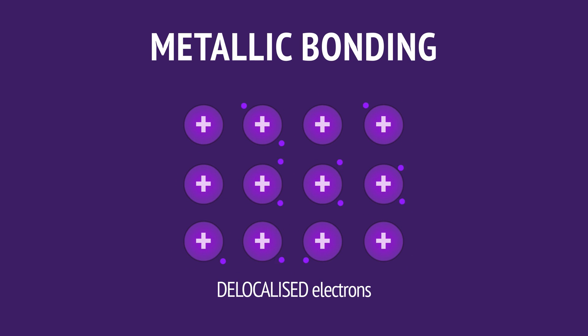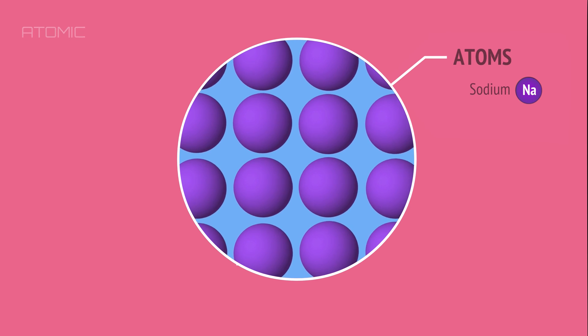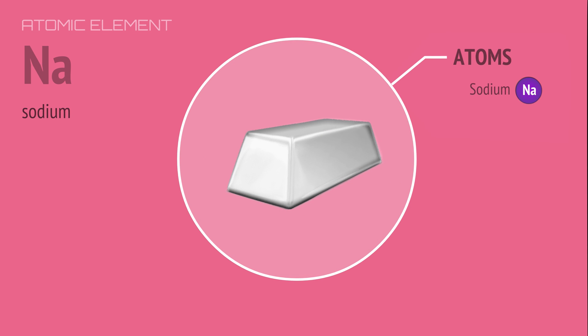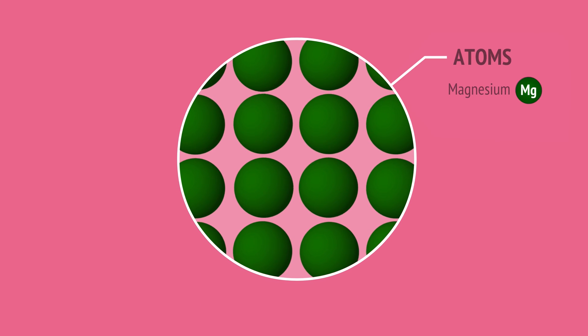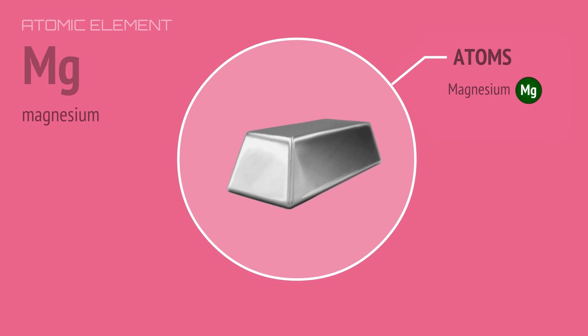Metallic bonding results in crystal lattices of metal atoms, like this lattice of sodium atoms that make up this sodium metal, or this lattice of magnesium atoms that make up this magnesium metal.